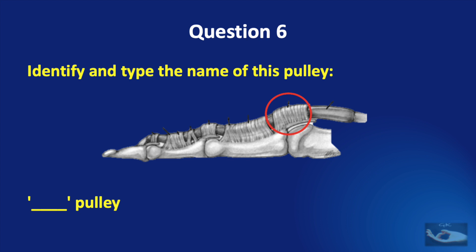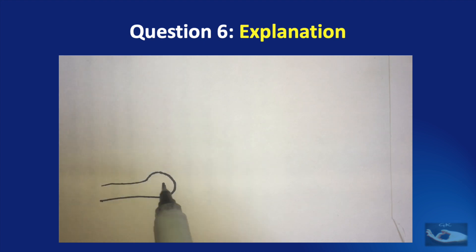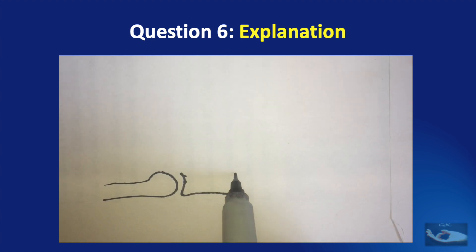Question number six: identify and type the name of this pulley. And the answer is A1 pulley. To understand the position of the annular and cruciform pulleys, we shall now draw a diagram.